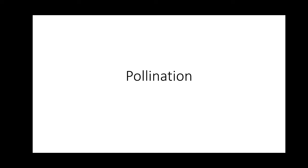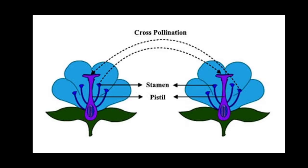Pollination is the process of transfer of pollen from the anther to the stigma. When this process takes place between two flowers of two completely different plants, we call it cross pollination. This process brings about the highest amount of variation in the offspring. It happens frequently because it is assisted by different types of agents, which fall under the category of agencies of pollination, assisting in sexual reproduction in flowering plants.